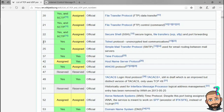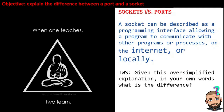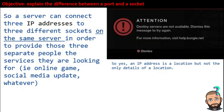Once upon a time in the good old days, Telnet was a widely known protocol. The part of the internet created by academics probably wasn't too worried about encrypting communication. A server can connect three IP addresses to three different sockets on the same server in order to provide those three separate people the services they are looking for. Imagine you and two other people all want to go to the same server — that server can connect three IP addresses to three different sockets on the same server.